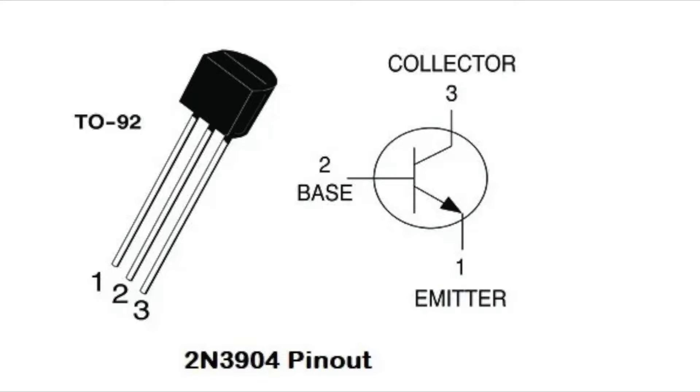It allows current to flow through the collector to the emitter when there is a small amount of voltage on the base pin, therefore acting as an automatic switch.